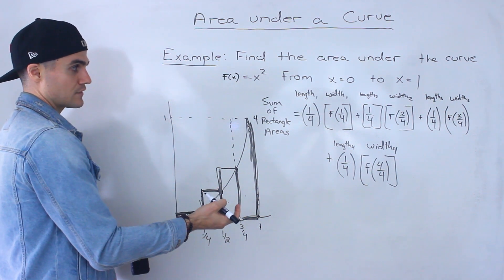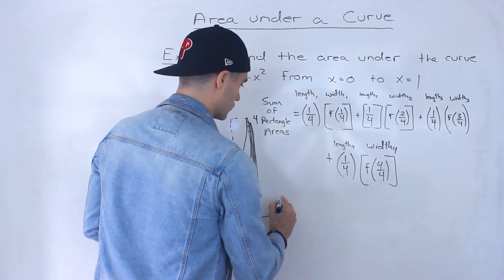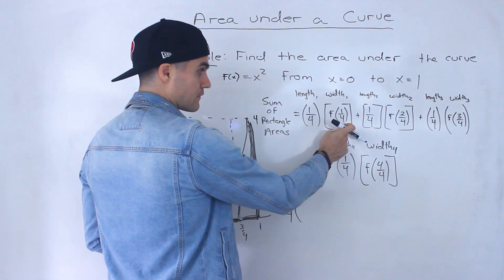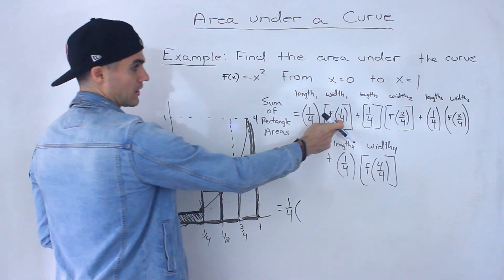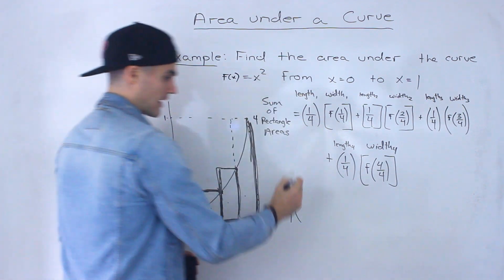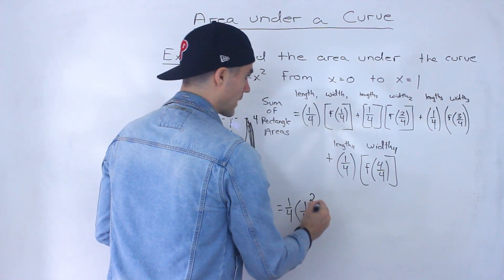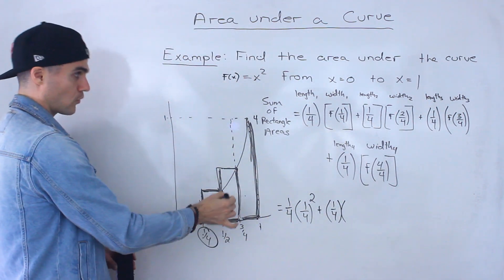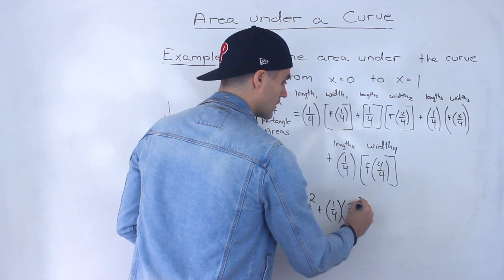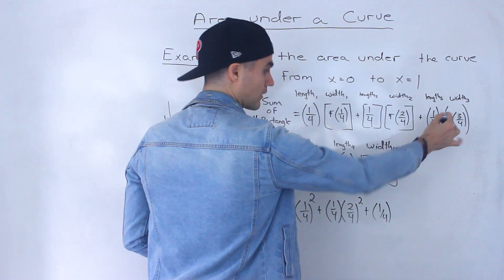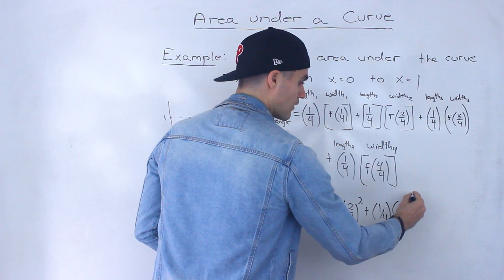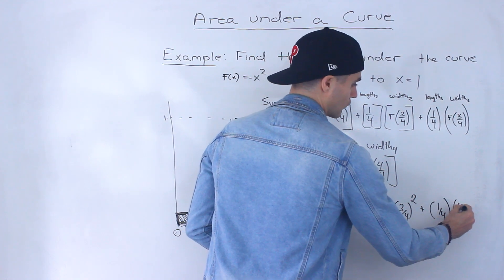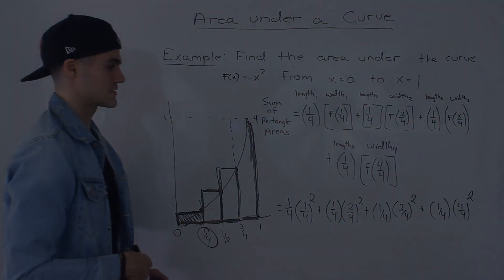Now let's get into the specifics of this actual function, x squared. We still have 1/4, and f(1/4) means we plug in 1/4 into x squared, giving (1/4)². Then we have 1/4 times (2/4)², plus 1/4 times (3/4)², plus 1/4 times (4/4)², which is just 1². So the full expression is (1/4)[(1/4)² + (2/4)² + (3/4)² + (4/4)²].